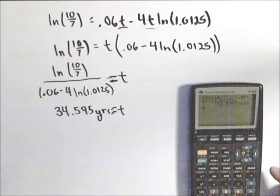And I've got that it's going to take about 34.595 years, because t is in years. Okay, now that's how we could do it algebraically.